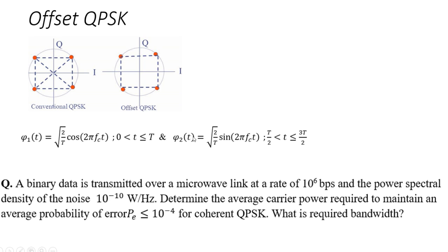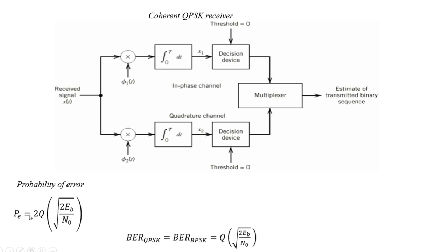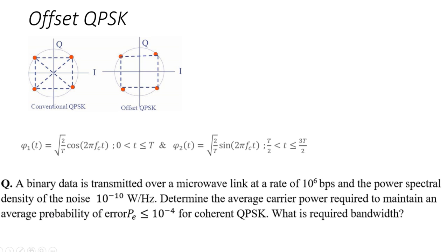Now we will solve a numerical based on the probability of error of a QPSK signal. A binary data is transmitted over a microwave link at a rate of 10^6 bps — small b means bits per second. The power spectral density of noise is 10^-10 watts per hertz. Determine the average carrier power required to maintain a probability of error less than or equal to 10^-4 for coherent QPSK, and find the required bandwidth. The probability of error formula for QPSK is 2 times Q of square root of Eb/N0.